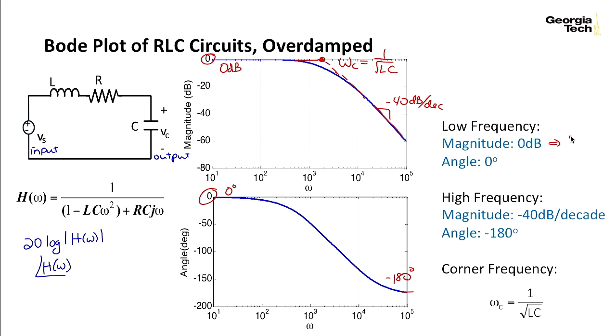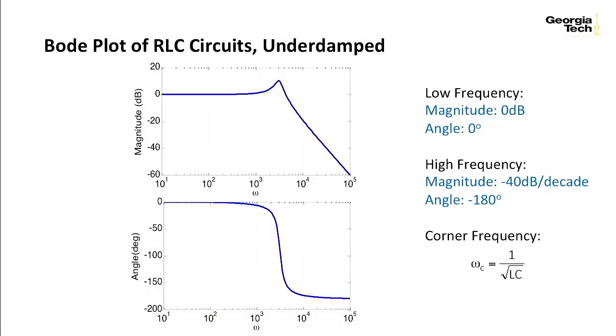And remember, zero dB corresponds to the output over the input amplitude equal to one. And at high frequency, we have this characteristic, and that is the corner frequency. That's the overdamped case.